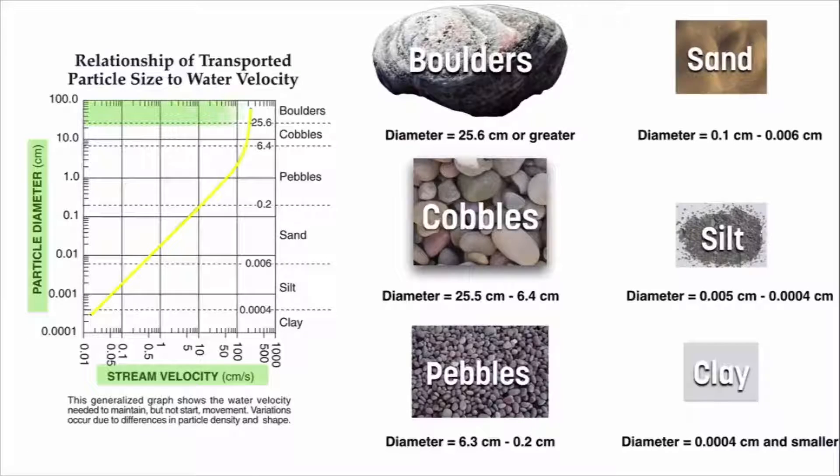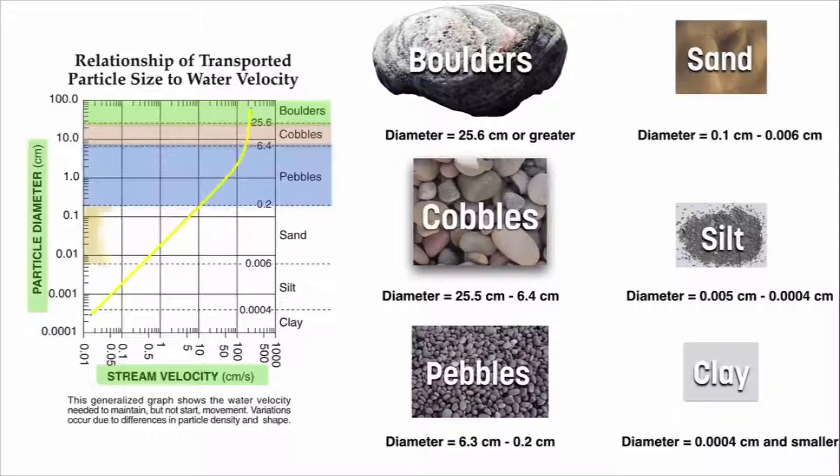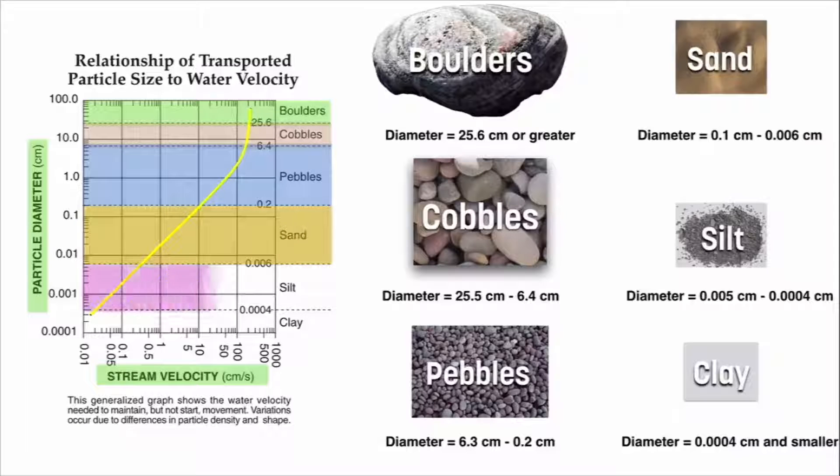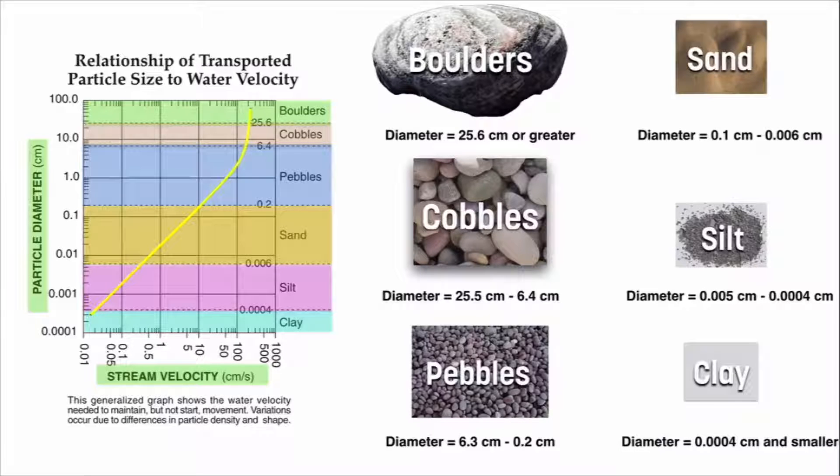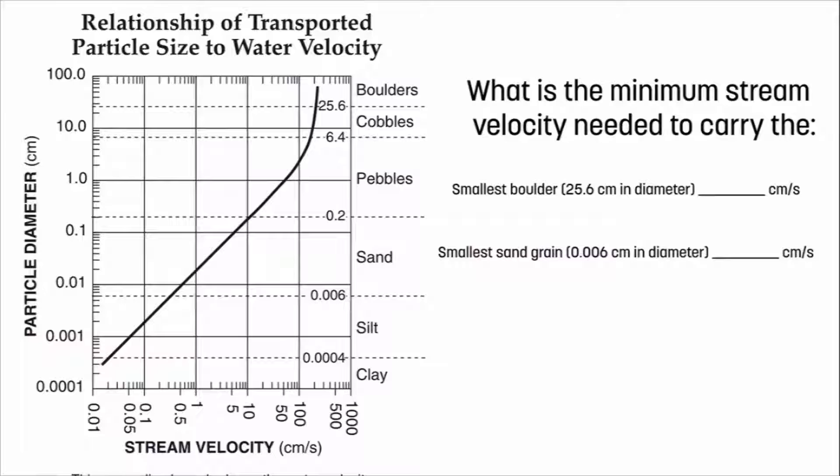So we already did this, but boulders, cobbles, pebbles, sand, silt, clay—those are the six sediments shown on this chart. The diameter of a boulder is between 25.6 centimeters or greater, and then cobbles are between 25.5 and 6.4, and so on and so forth. So let's look at an example of a question that can be asked using this chart from our reference table.